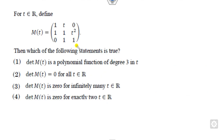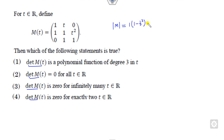If you closely look at this question, you can first look at the options. This involves the determinant. So you have to first find the determinant of this matrix M. The determinant works out to 1 minus t squared minus t.